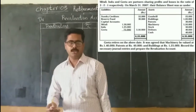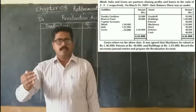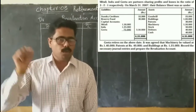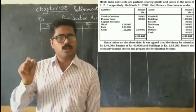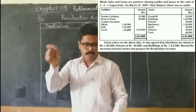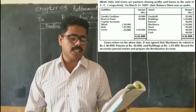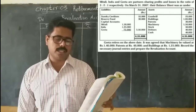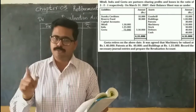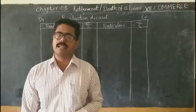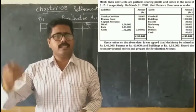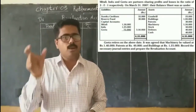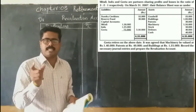When preparing the revaluation account, we record only the difference — not the book value or the current value in full. For example, machinery was 1,50,000 as per the last balance sheet, and its current value is 1,40,000. So machinery decreased by 10,000. A decrease in an asset is a loss to the organization, so we debit 'to machinery — 10,000'.